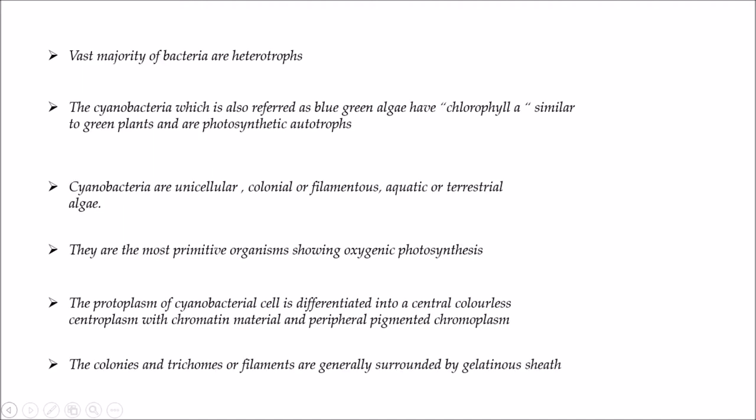Cyanobacteria, also referred to as blue-green algae, have chlorophyll a similar to green plants and are photosynthetic autotrophs. They are unicellular and live as colonial or filamentous forms in either aquatic or terrestrial habitats. They are the most primitive organisms showing oxygenic photosynthesis.